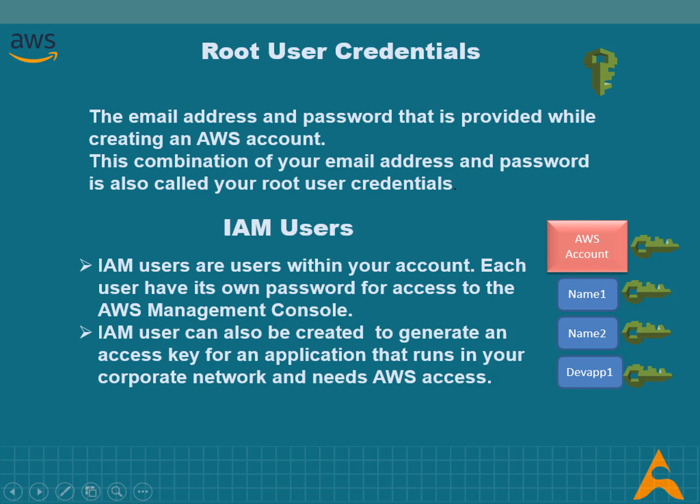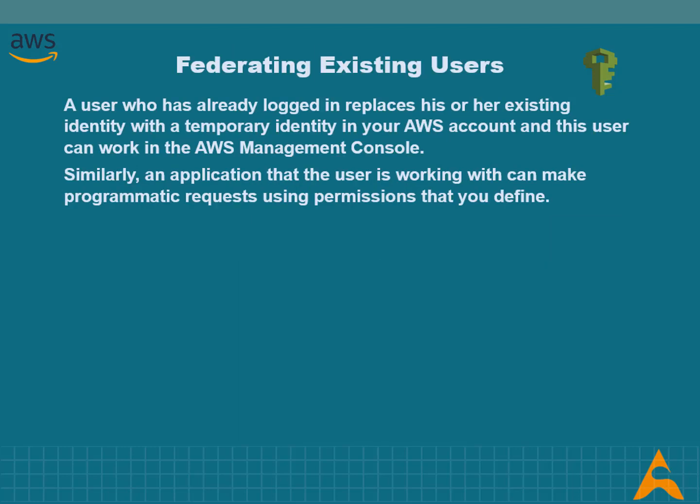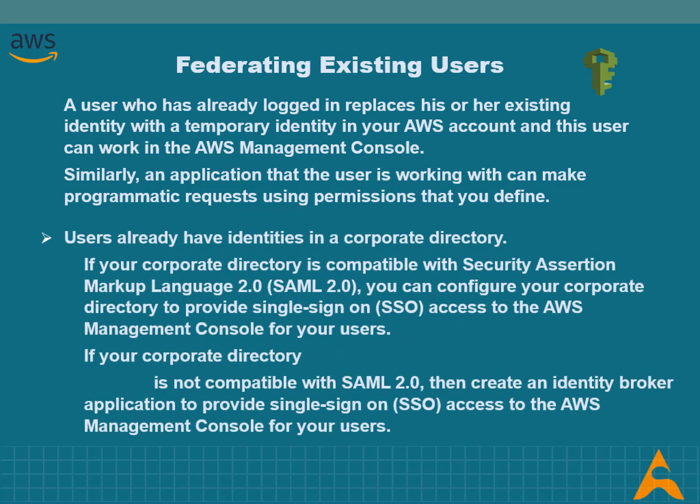IAM users are users within your account; each user has their own password for access to the AWS Management Console. You can also create individual access keys for each user so they can make programmatic requests to work with resources in your account. An IAM user can also be created to generate an access key for an application that runs in your corporate network and needs AWS access. You can also federate users who have a way to be authenticated into AWS; a user who has already logged in replaces their existing identity with a temporary identity in AWS.